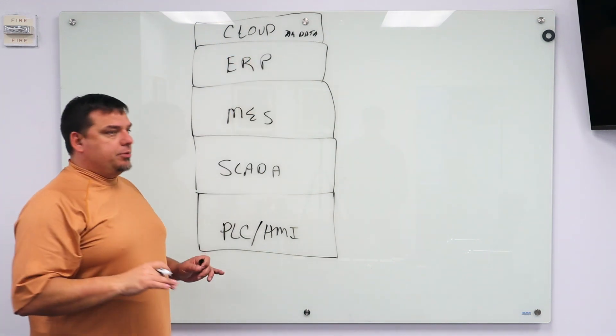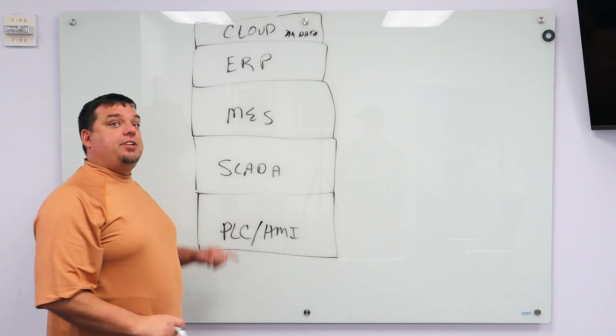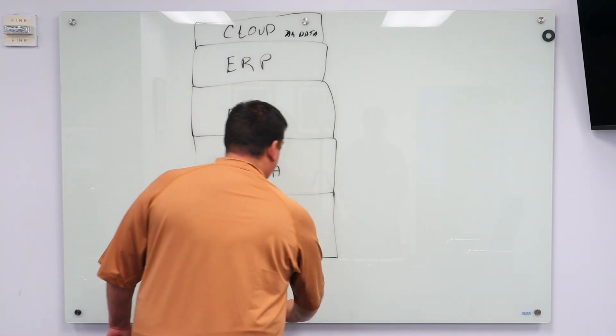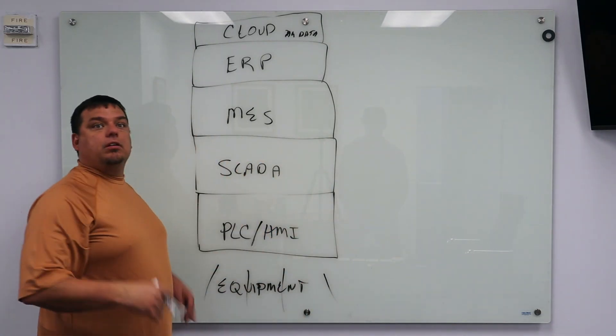In the old days, and actually some people still use this, PLC and HMI are a separate layer. At the bottom, you have my equipment, our factory floor, our operations.